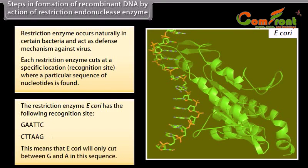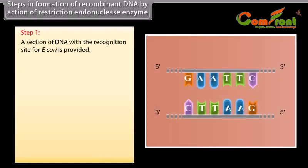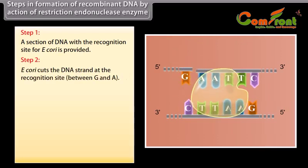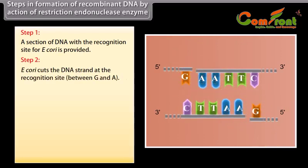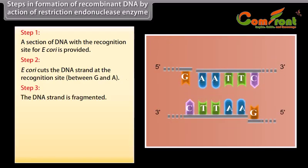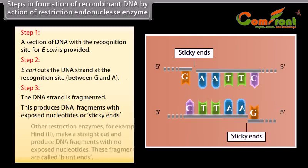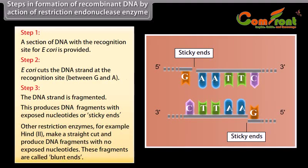EcoRI will only cut between G and A in this sequence. Step 1: a section of DNA with a recognition site for EcoRI is provided. Step 2: EcoRI cuts the DNA strand at the recognition site between G and A. Step 3: the DNA strand is fragmented, producing DNA fragments with exposed nucleotides called sticky ends. Other restriction enzymes, for example HindII, make a straight cut and produce DNA fragments with no exposed nucleotides, called blunt ends.